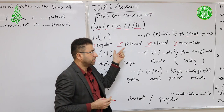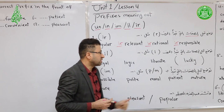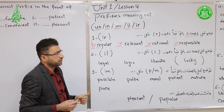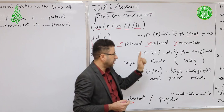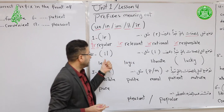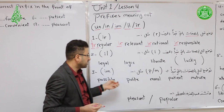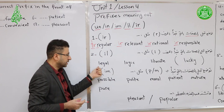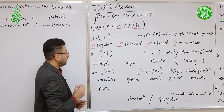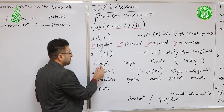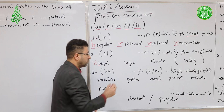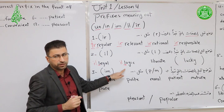Note number two: the prefix IL is placed before adjectives that begin with the letter L. For example: Legal → Illegal (غير قانوني), Logic → Illogic (غير منطقي). We add the prefix IL to the adjective, and it becomes part of the word — you cannot write it separately.